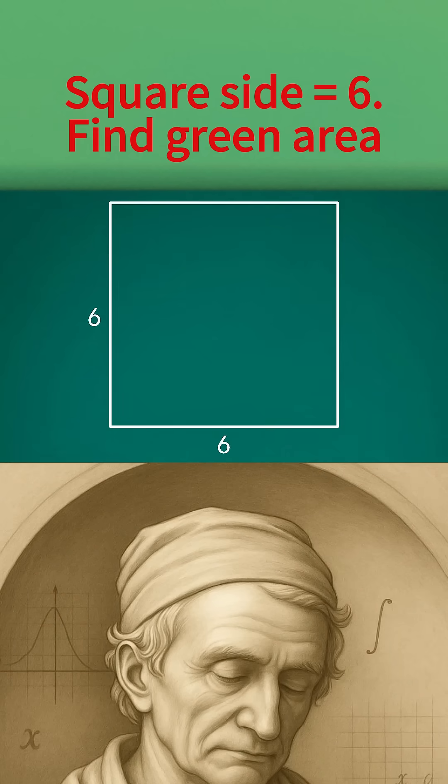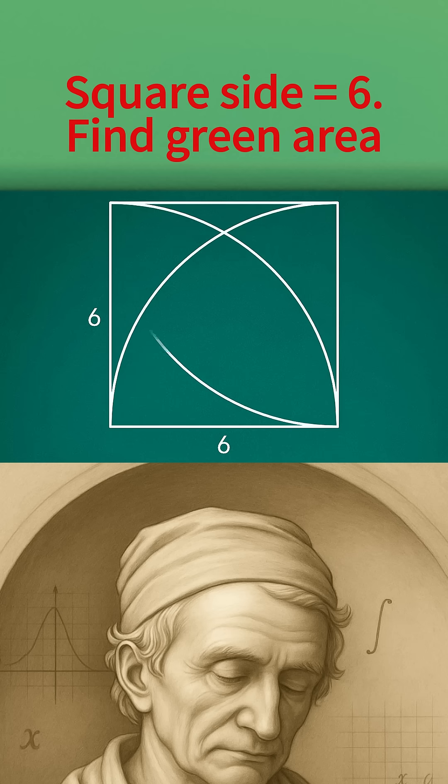This is a square with a side length of 6. At each corner, we draw a sector with the radius equal to the side length. Find the area of the green part.